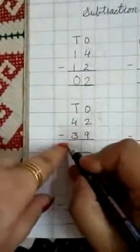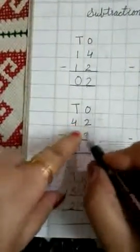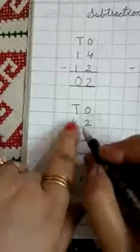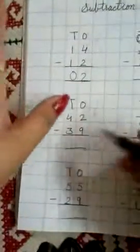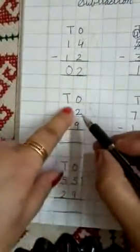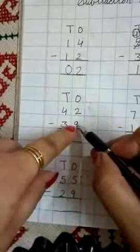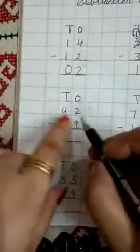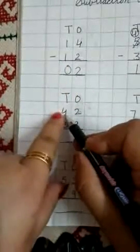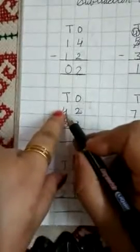Next is 42 minus 39. 42 is bigger than 39, but when we subtract separately by place, we look at the ones digits. Here is 2 at the top and 9 at the bottom. 9 is bigger and 2 is smaller, so we cannot subtract 9 from 2. What will happen? 2 will ask for help from its friend in the tens place, which is 4. That friend is in the place of 10.